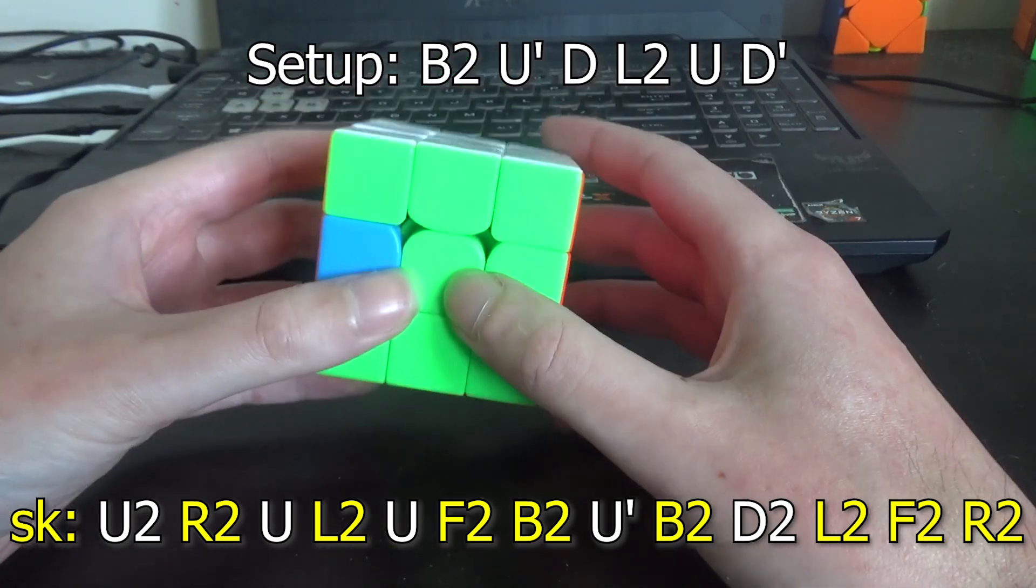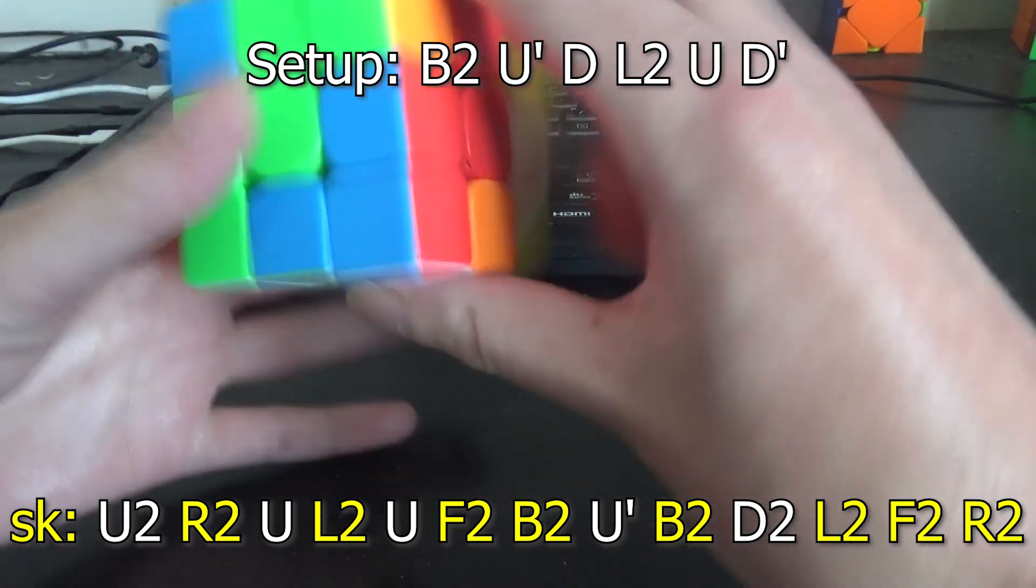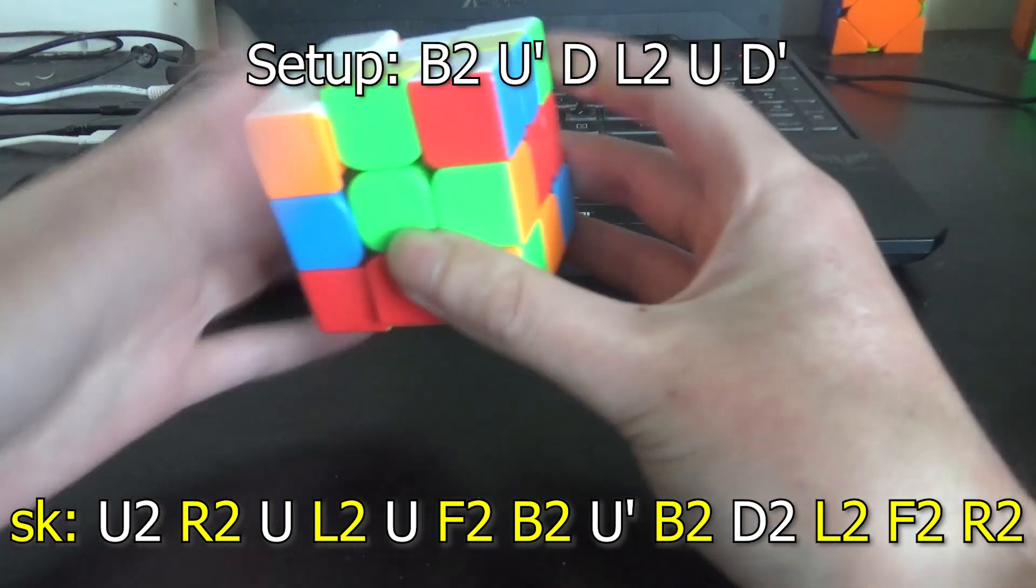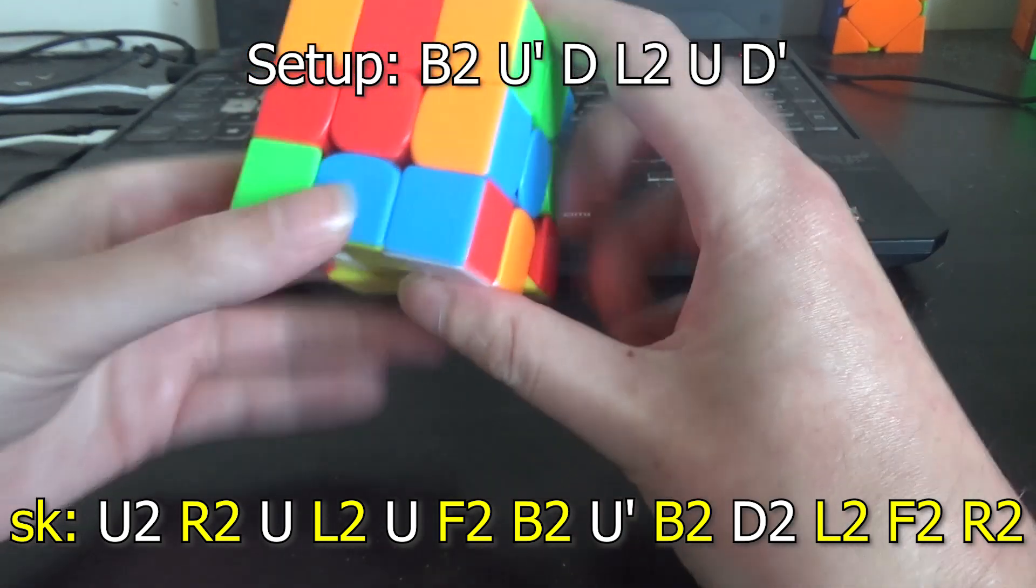So the next thing to try would be widening the U quarter turns and the U prime. So let's try that. UL2U F2B2UW prime.